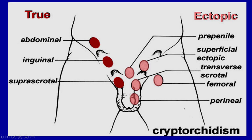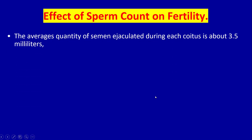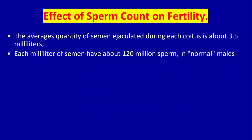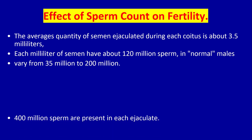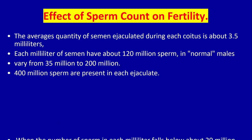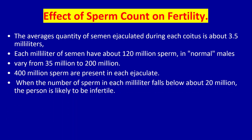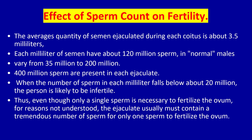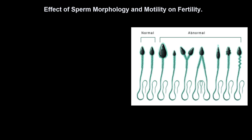The average quantity of semen ejaculated during each coitus is about 3.5 milliliters. Each milliliter of semen in a normal male contains about 120 million sperm, varying from 35 million to 200 million, with about 400 million sperm present in each ejaculation. When the number of sperm per milliliter falls below about 20 million, the person is likely to be infertile. Thus, even though only a single sperm is necessary to fertilize the ovum, for reasons not fully understood, the ejaculate must contain a tremendous number of sperm for fertilization to occur.